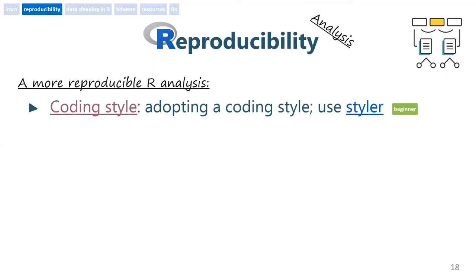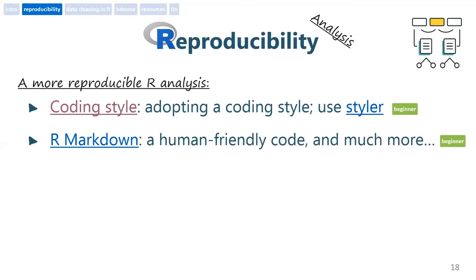If you're starting with R and just a beginner, then know that this is exactly the time to start learning the style of code and invest in it, because good habits are easier at the beginning. Also, invest in learning R Markdown, which is human-friendly code and much more. As the R Markdown website says: if your data tells a story, tell it with R Markdown.